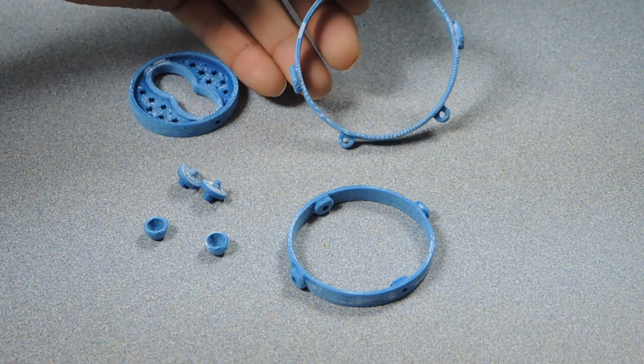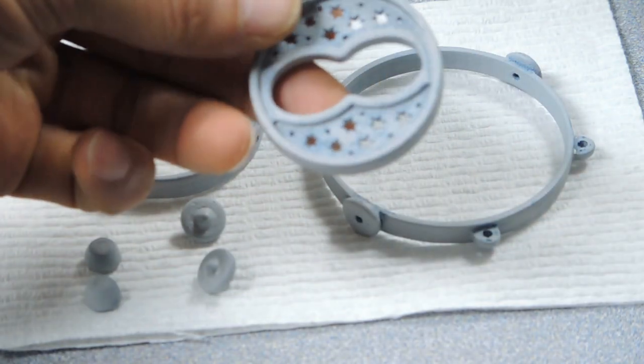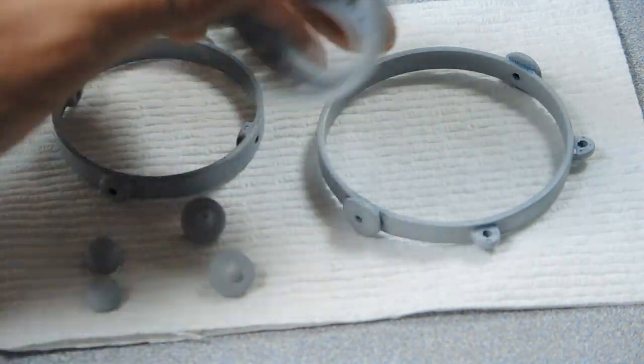Here are all the parts ready for the first round of priming. After the first round of priming, we still have some voids, so we need to go back and do more wood filler and sanding.